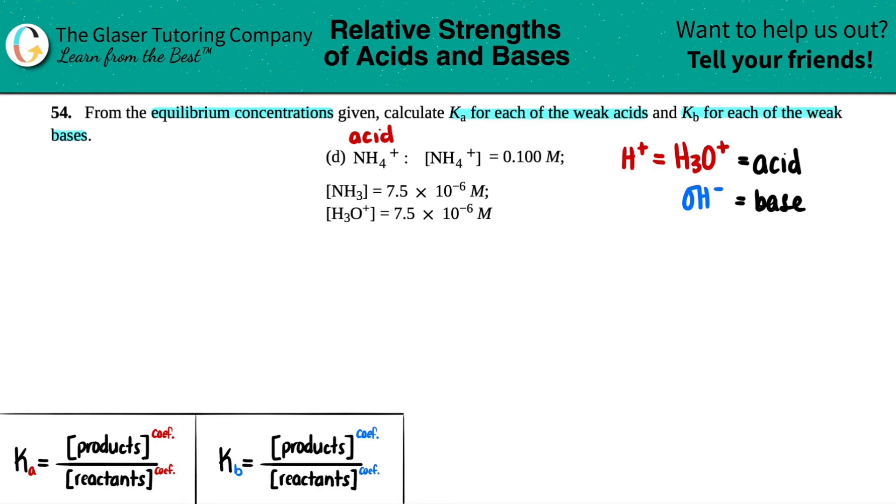Next, let's write a balanced equation to get everything set up. Remember, acids and bases are in water, which is the general solvent. So we have NH4+ plus H2O.